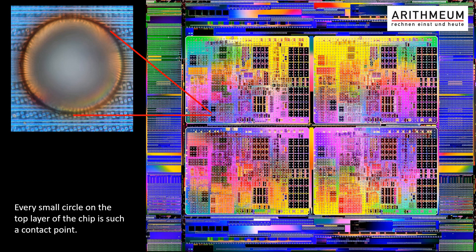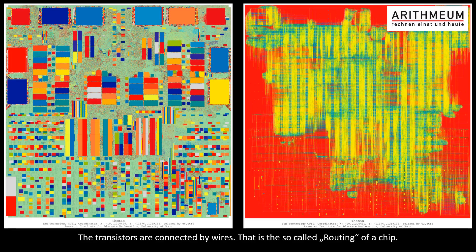Both pictures show the design of the same chip. On the left we can see the placement layer. On the right is the corresponding wiring — the routing. In the actual chip, those layers are on top of one another.